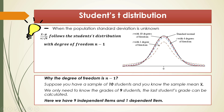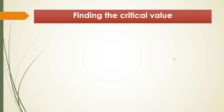Going back to the student t distribution, here are some properties. First, just like the standard normal distribution, the curve of the student t distribution is symmetric around 0. It has a unique mode. But the spread of the student t distribution is wider than the spread of the standard normal distribution.